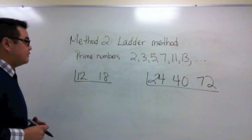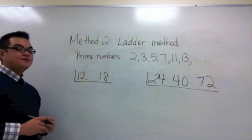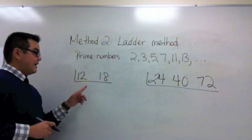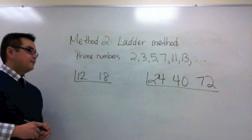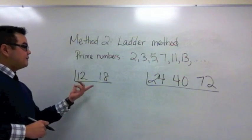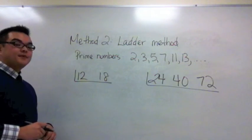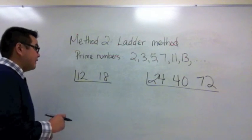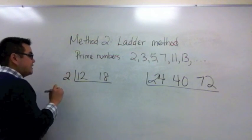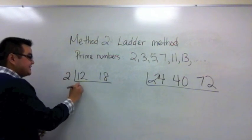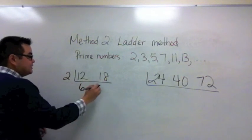When using the ladder method you put the two numbers that you want to find the GCF of in a ladder and it's basically an upside down division problem. You have to think of what prime number goes into both 12 and 18. In this case 2 goes into both 12 and 18. So I put a 2 on the outside. 12 divided by 2 is 6. 18 divided by 2 is 9.